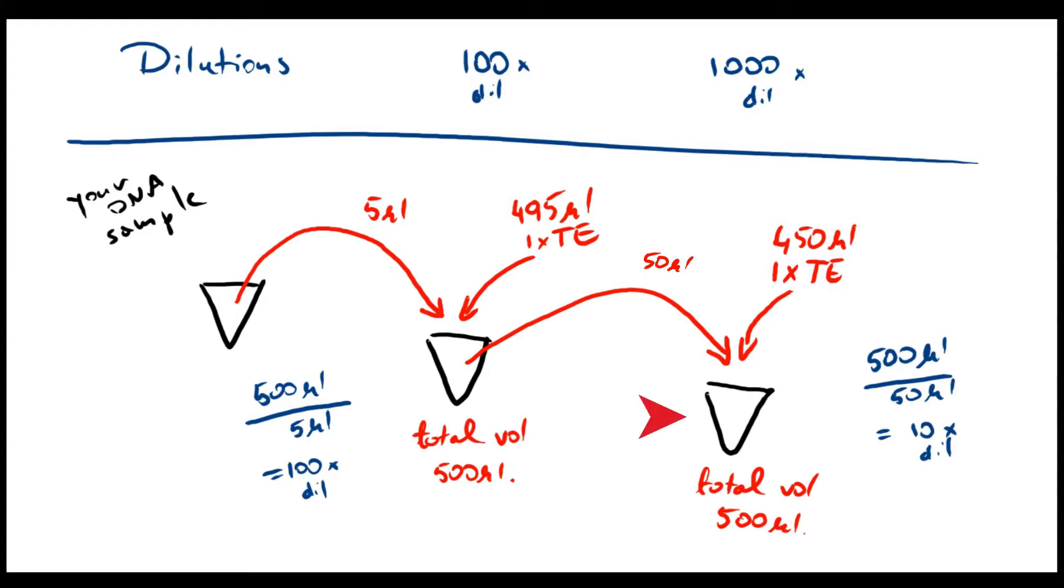So now this new sample is 10 times less concentrated than your 100-fold dilution. And so, 10 times 100-fold means it's a 1,000-fold dilution in total. This sample is 1,000 times less concentrated than your original, which is hopefully at this point sitting in a freezer.